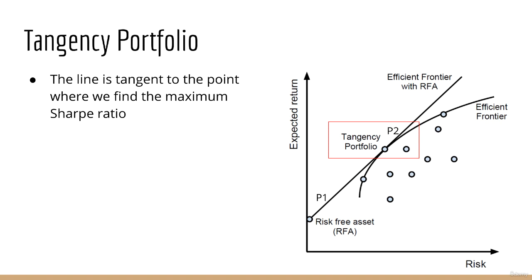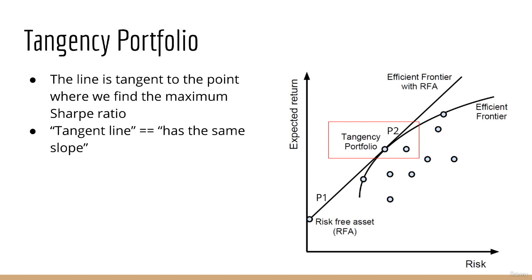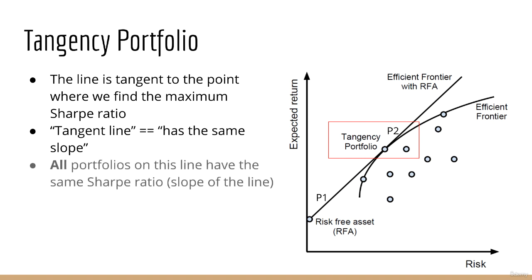One interesting consequence of this line is that it is tangent to the point where we find the maximum Sharpe ratio. For this reason we call this portfolio the tangency portfolio — it simply means the efficient frontier is tangent to the line at the point of maximum Sharpe ratio. From calculus, a tangent line has the same slope as the curve at that point. Therefore any portfolio made up of the tangency portfolio and the risk-free asset has the same Sharpe ratio — the maximum Sharpe ratio is also the slope of this line.